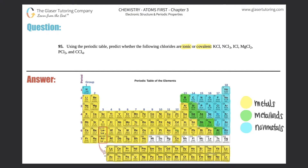We basically have to look at these six compounds and determine whether each compound is either ionic or covalent. They're called chlorides because, as you've noticed, all of these compounds have chlorine in them. That's why they're all classified as chloride compounds.